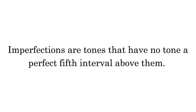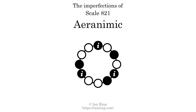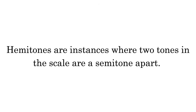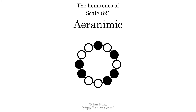Imperfections are tones that have no tone a perfect 5th interval above them. This scale has three imperfections, at positions here, here, and here. Hemitones are instances where two tones in the scale are a semitone apart. This scale has two hemitones, at positions here and here.